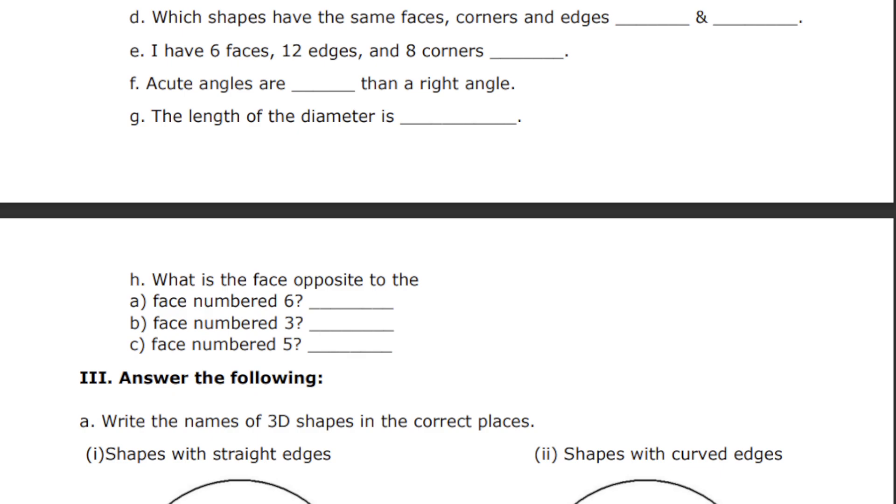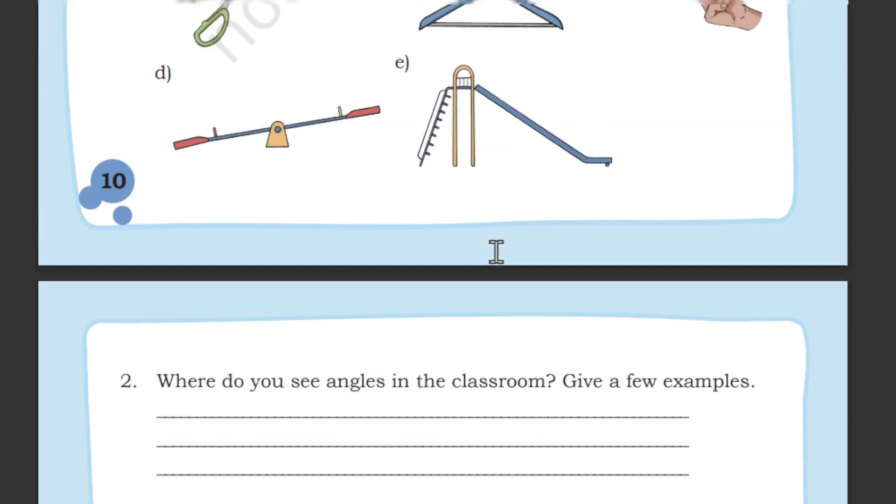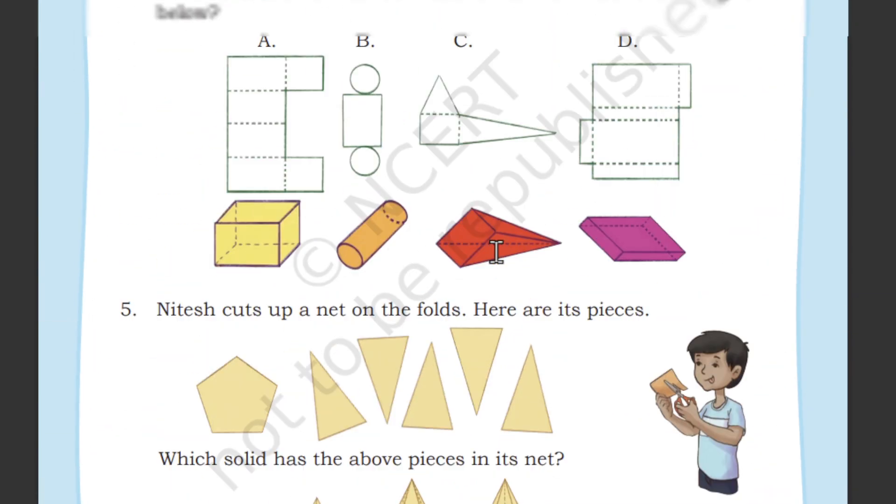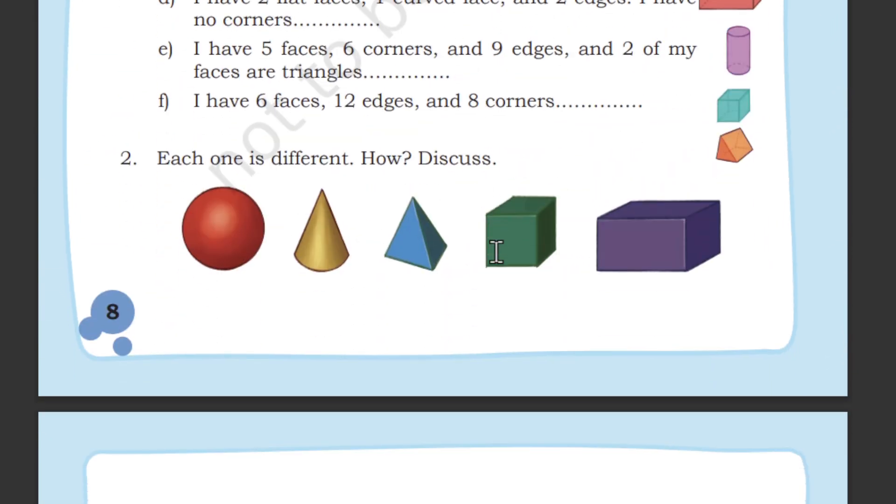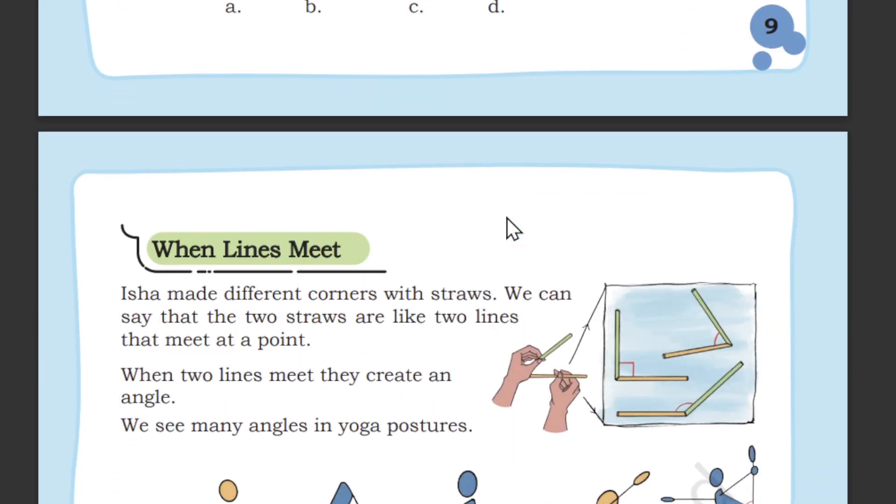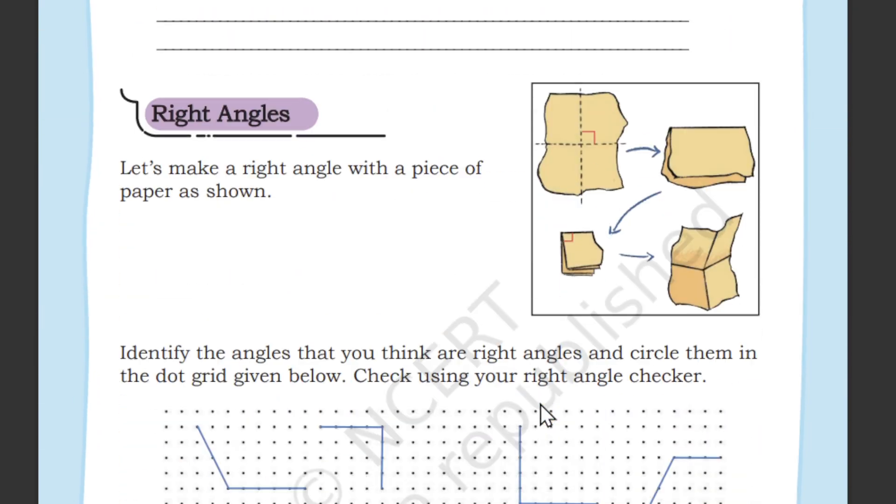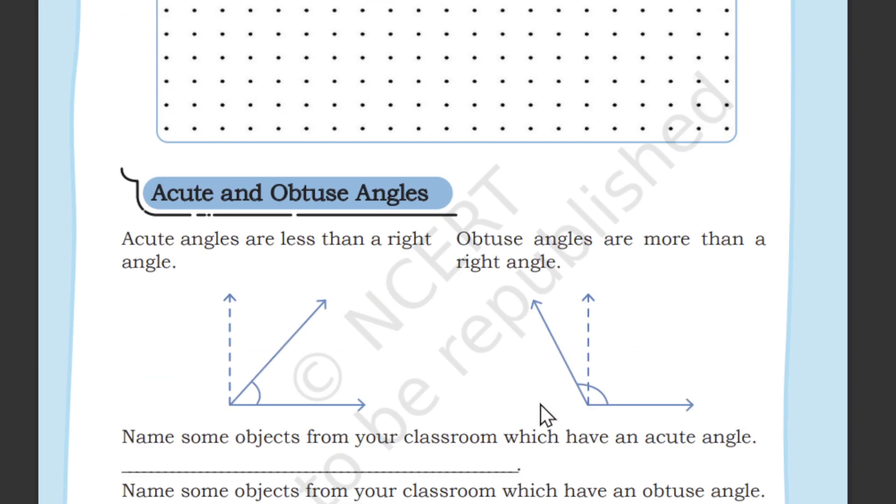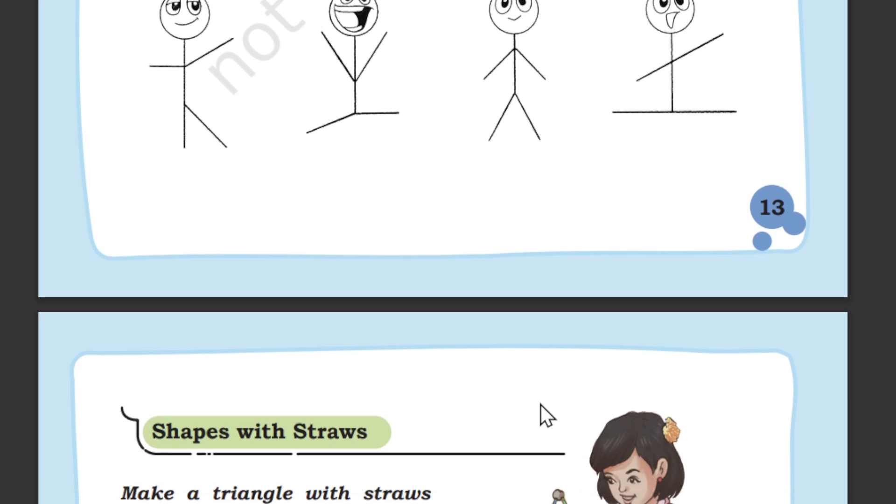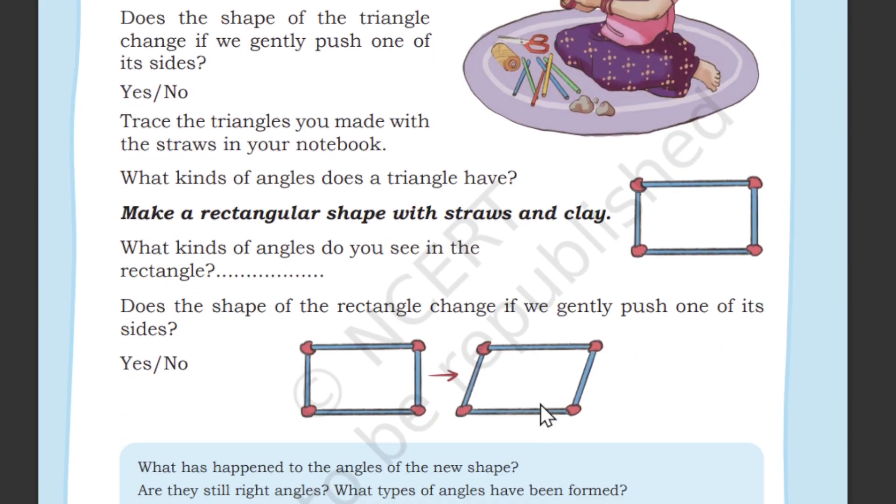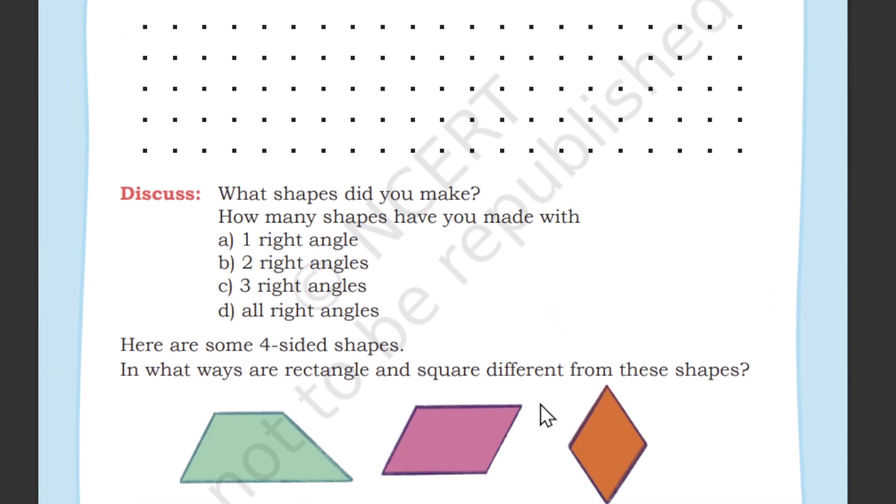We learned about acute angle, obtuse angle, and right angle, right? When lines meet, it's called angle. Page number 10, page number 11, page number 12, page number 13, all involved about the angles.